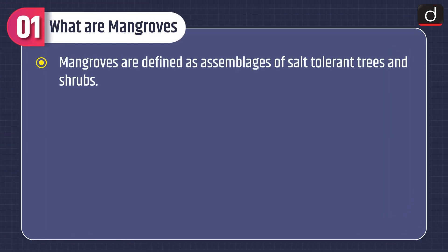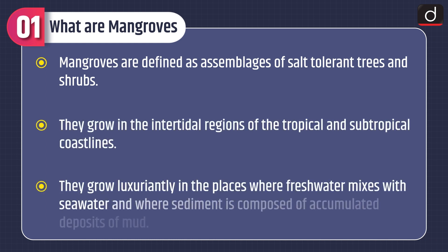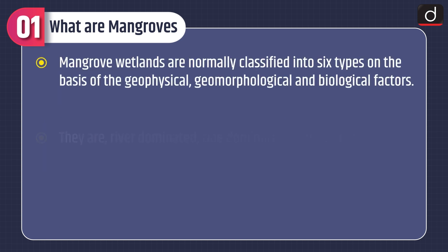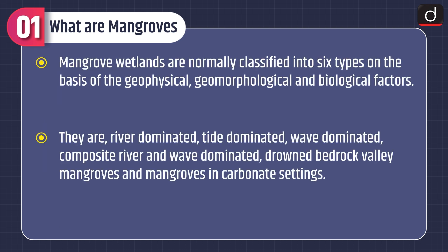First of all, let's discuss what are mangroves. Mangroves are defined as assemblages of salt-tolerant trees and shrubs. They grow in the intertidal regions of the tropical and subtropical coastlines. They grow luxuriantly in the places where fresh water mixes with seawater and where sediment is composed of accumulated deposits of mud. Mangrove wetlands are normally classified into six types on the basis of the geophysical, geomorphological and biological factors.